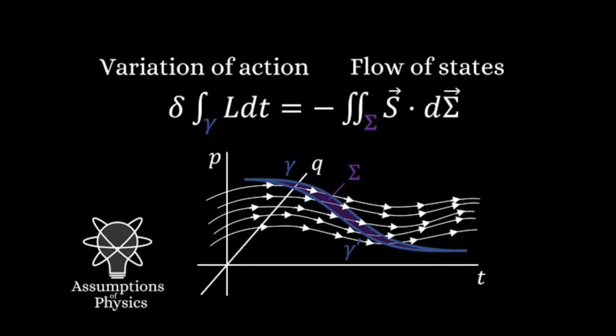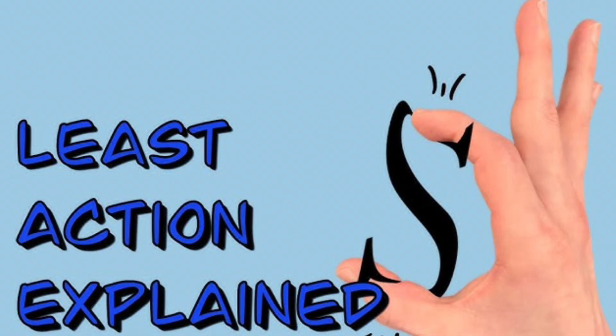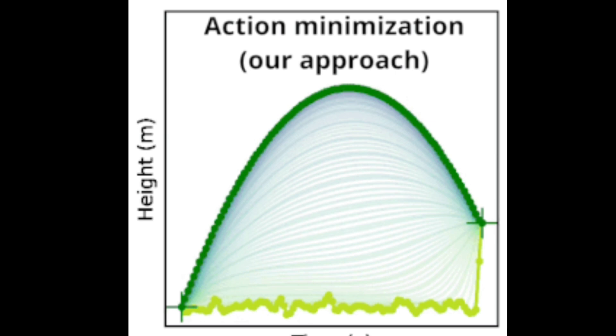Applications in Physics. Classical Mechanics: In Classical Mechanics, the principle explains why objects move the way they do. For example, a planet orbiting the sun follows a path that minimizes the action, leading to Kepler's laws of planetary motion.